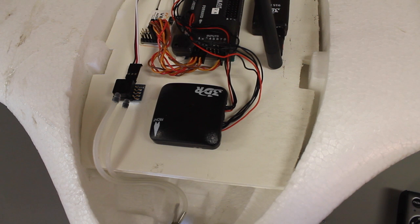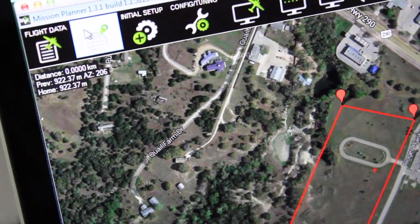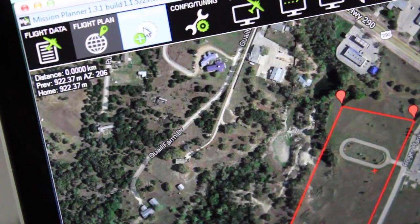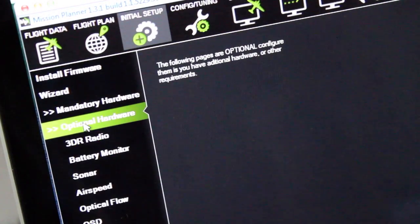So let's go ahead and look at the mission planner setup to start getting readings from our airspeed sensor. Now we're connected to mission planner. We're going to go to initial setup, optional hardware and then select airspeed.